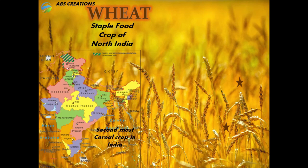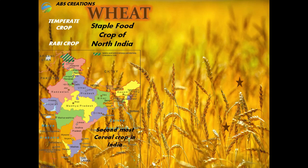Wheat is particularly a staple food in the northern and northwestern parts of the country. It is a temperate crop as well as a rabi crop. It is a rabi crop because this crop is grown in the rabi season. As the staple food crop of north India, it lies in the temperate zone, so it acts as a temperate crop.